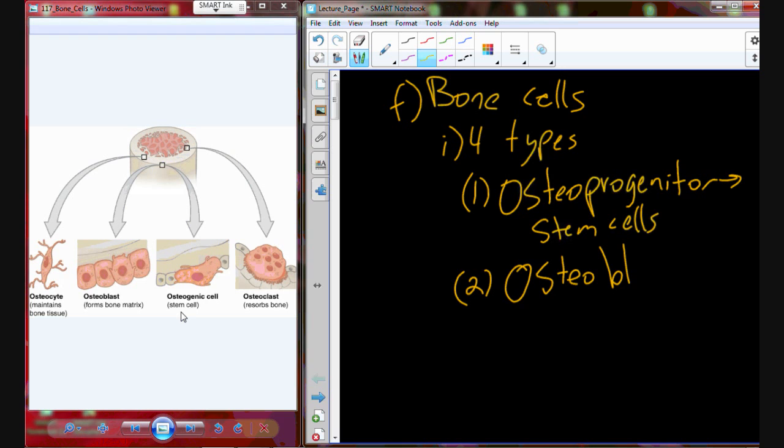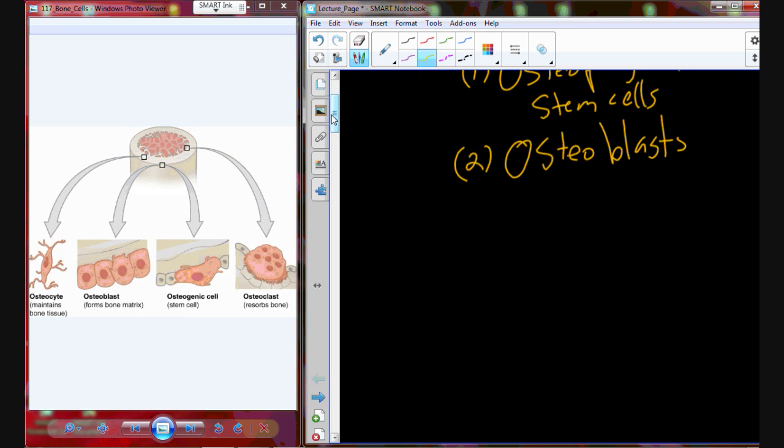Then we have osteoblasts. When it comes down to bone physiology, these next three types of bones, you're going to hear a lot about them. So the osteoblast, focus on the B. Osteoblasts are bone builders. These are going to be cells that form bone, and they're going to aid in the calcification process.